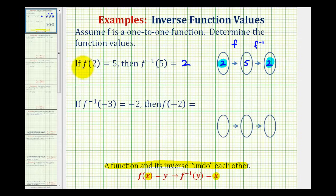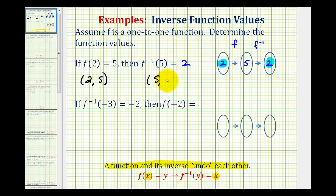One more thing we should notice: if f of two equals five, f contains a point with an x coordinate of two and a y coordinate of five. And if f inverse of five equals two, f inverse contains the point with an x coordinate of five and a y coordinate of two. Notice how the x and y coordinates have been switched, which is the reason why the graph of f and f inverse are symmetrical across the line y equals x.